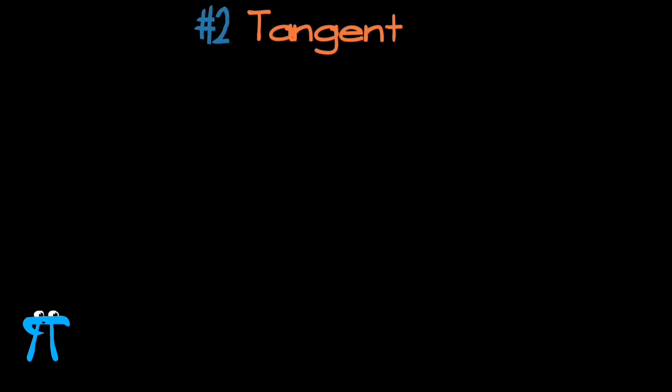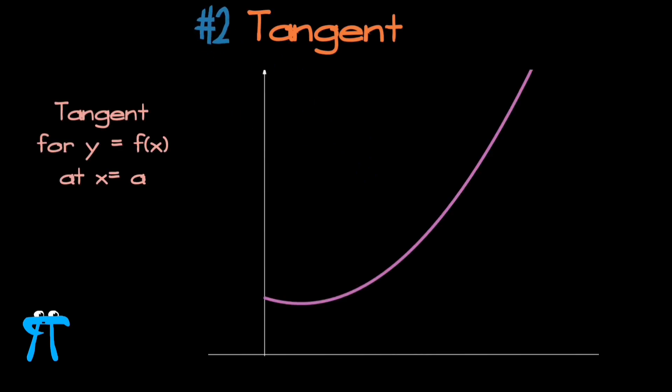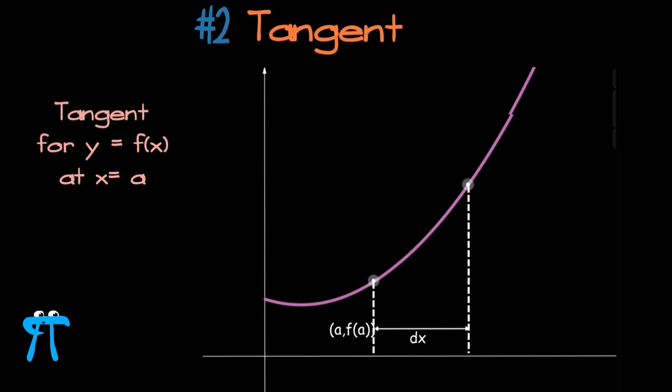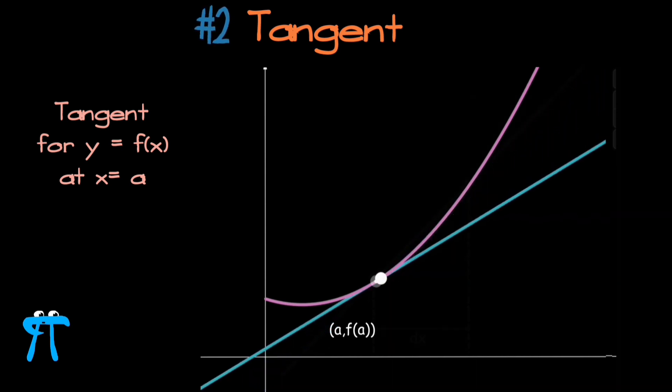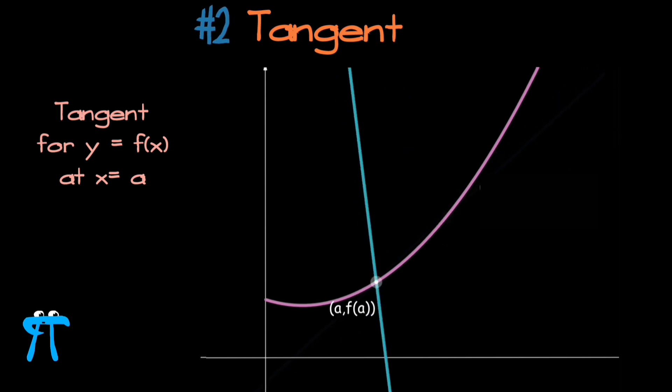And the second problem is, Leibniz defined the tangent to a graph of a function fx at x equal to a by saying, take a point a, f of a, then add infinitesimal amount to a, that is a plus dx, then take the point a plus dx, f of a plus dx, and draw the line through these points. But if there are two different points on graph, then it's not a tangent, and if it is just one point, because infinitesimals are smaller than every positive real, then how would you define a line from a single point?